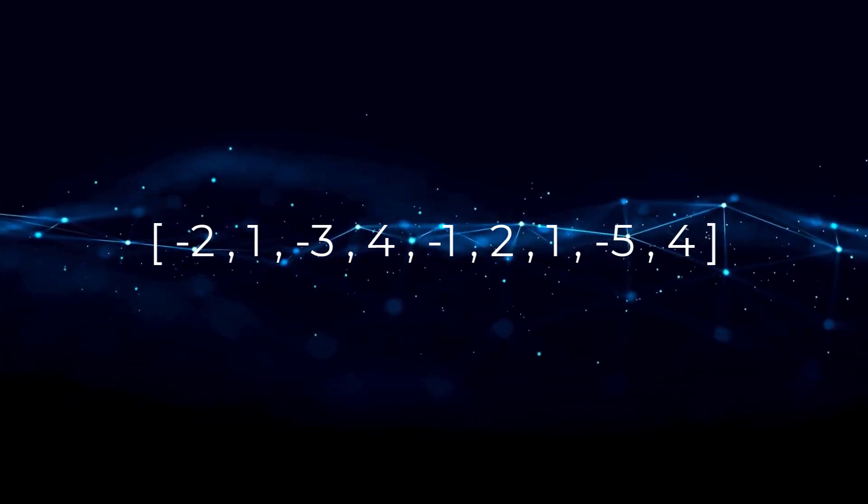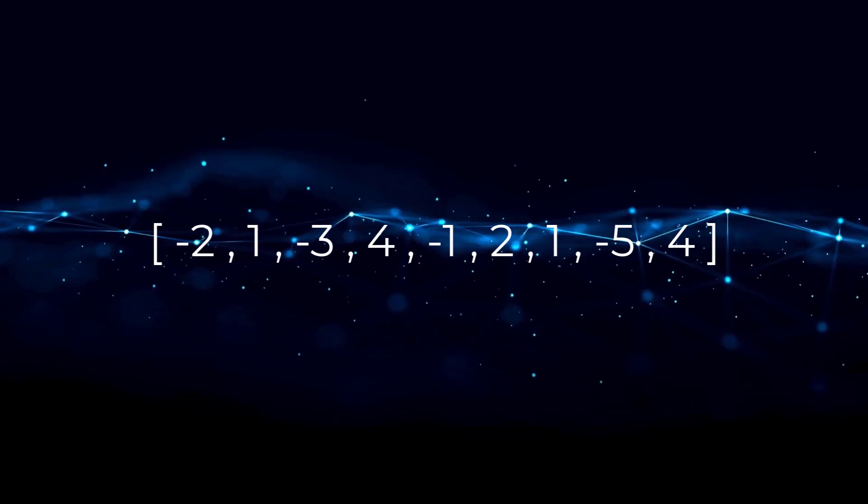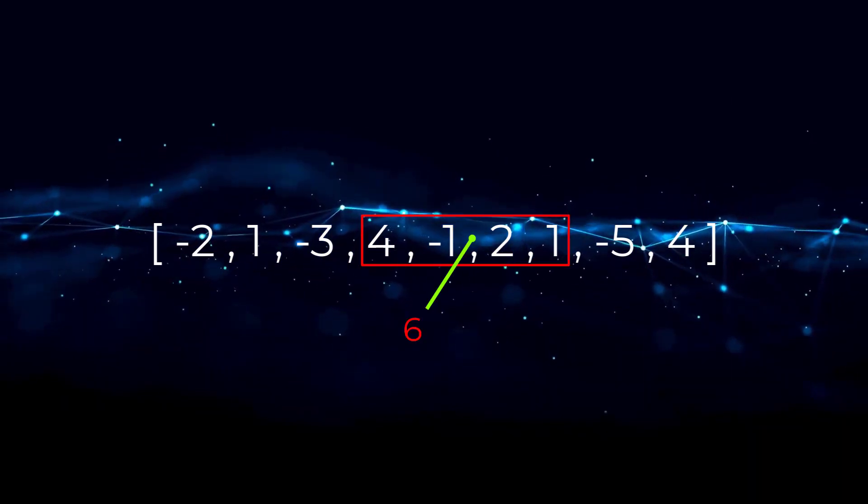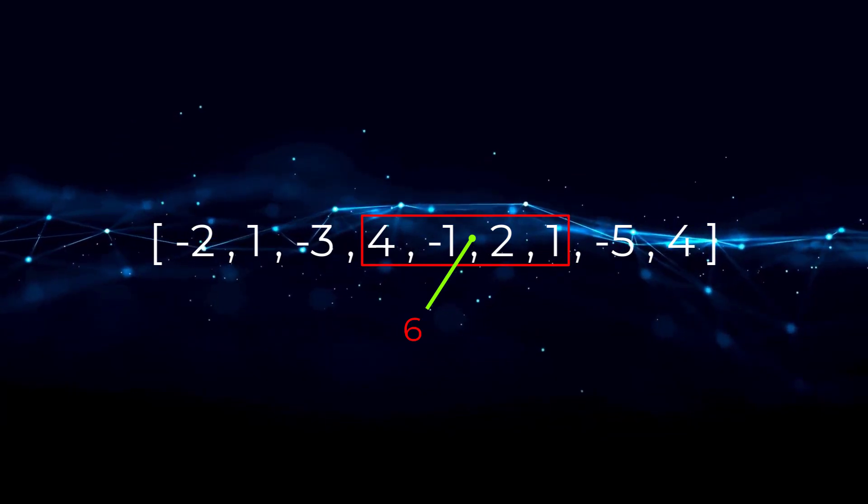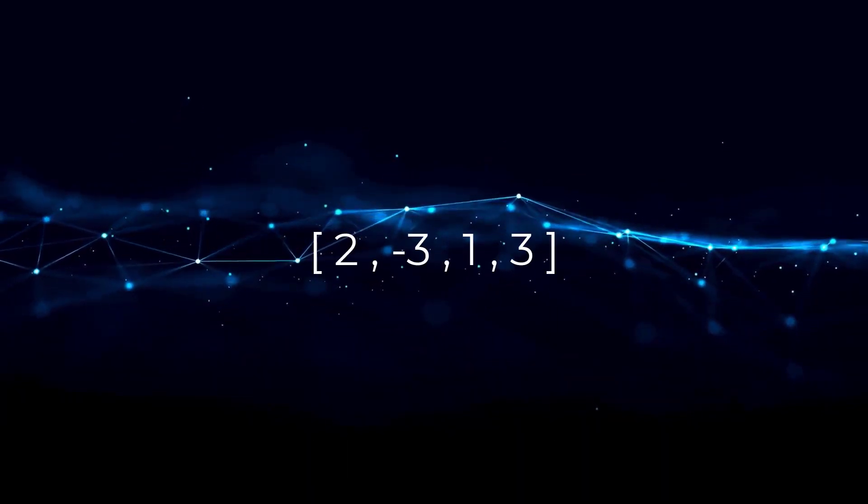So in this example, our maximum subarray would be 4, negative 1, 2, 1, which equals a sum of 6. Thus, we would return 6 from our function. With that out of the way, let's look at the brute force approach for this problem.